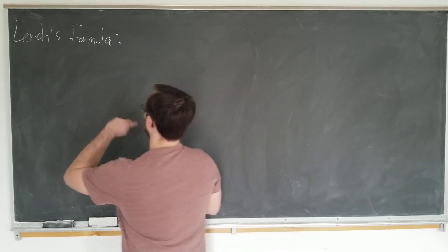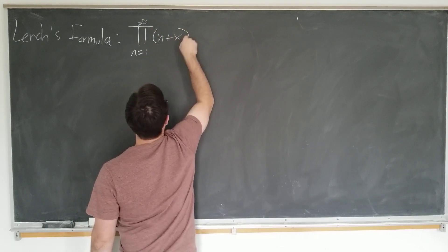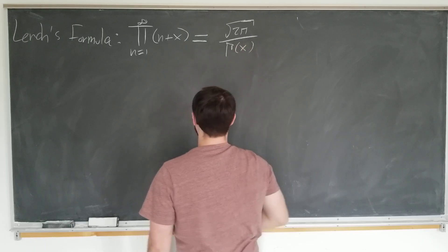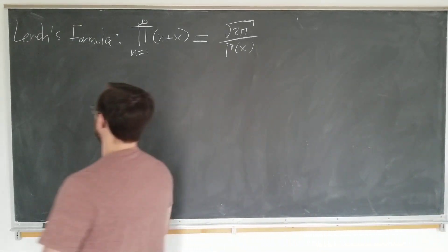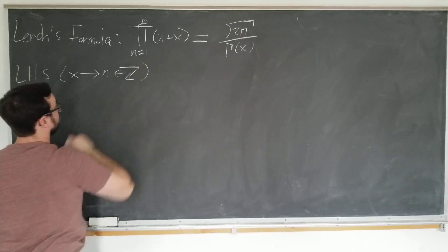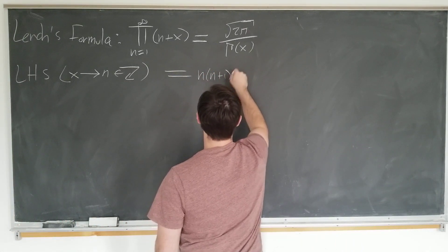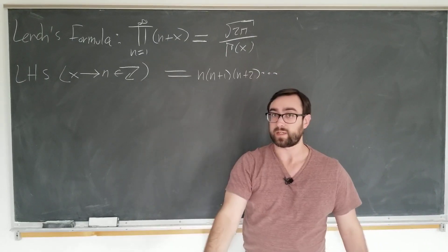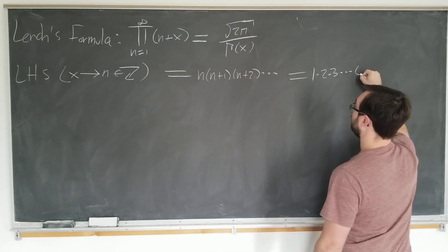Lerch's formula states that the product as n goes from 1 to infinity of (n + x) is equal to the square root of 2π divided by gamma of x. This is not mysterious — it's actually kind of what you would expect. Looking at the left-hand side with x going to some integer n, this is simply n times (n+1) times (n+2), et cetera. We multiply and divide by the product of all the numbers that came before: 1 times 2 times 3, et cetera, all the way to n.